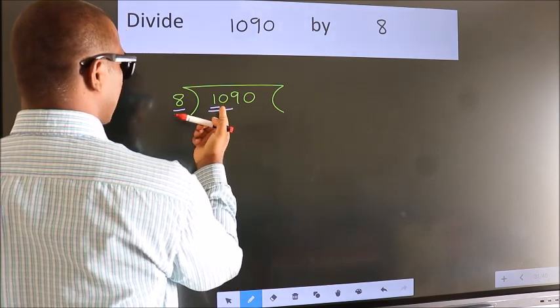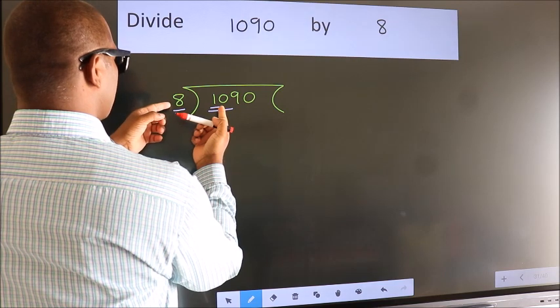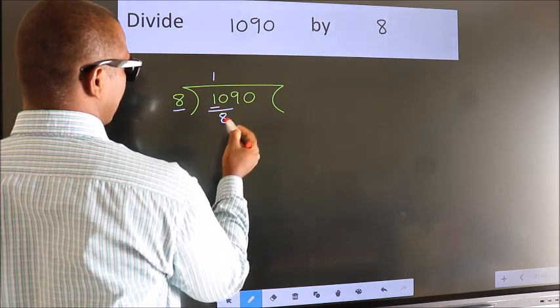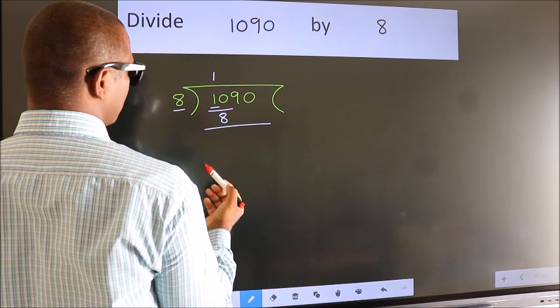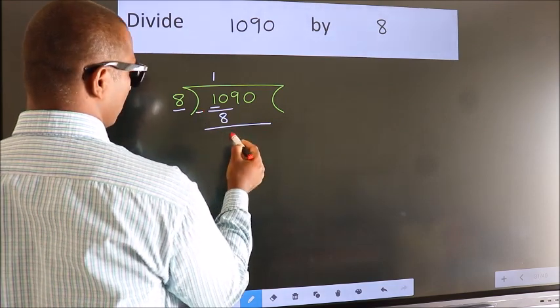A number close to 10 in the 8 table is 8 once, 8. Now we should subtract. We get 2.